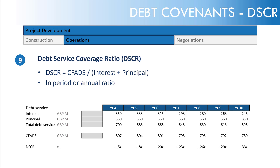Why might it be increasing over time? That's a feature of the style of debt repayment we've selected. Because we've selected fixed principal, the total of principal plus interest decreases over time — it starts off very high, which results in a low DSCR, and it decreases over time. More on that later.